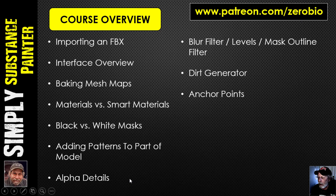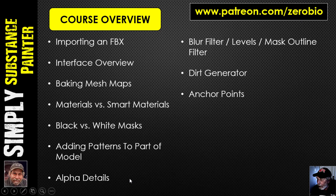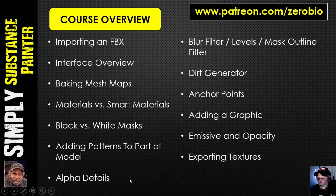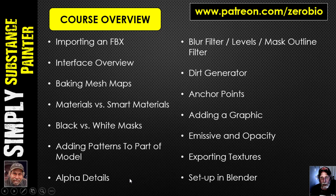We'll look at anchor points, which is a method used to get the effects of a generator on things like height maps from alpha details or normals that might look a little too clean and not mesh with a dirty model. We'll be adding the compass graphic and looking at emissive and opacity. Then we'll talk about exporting textures using export templates — I'll be doing it for Blender, so there may be some differences for other software. Once exported, we'll set it up in Blender so you can see the final results on your model.